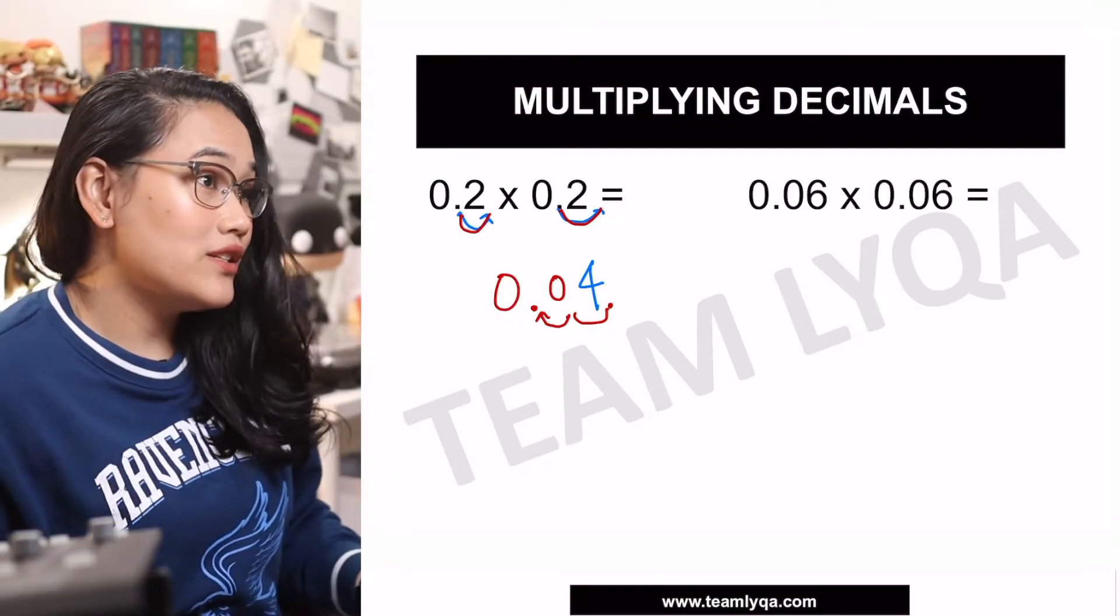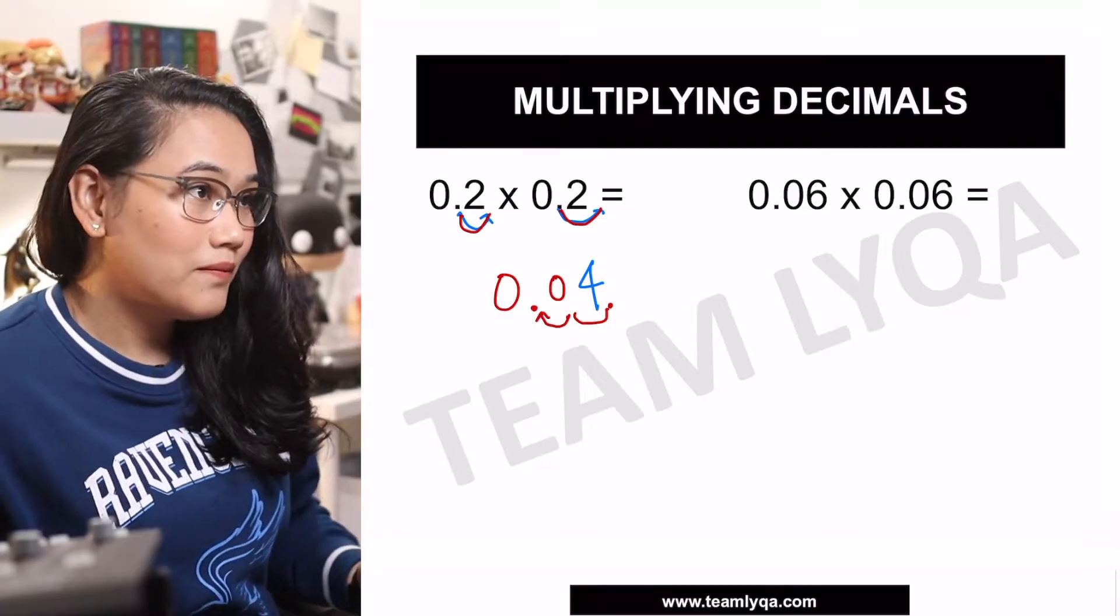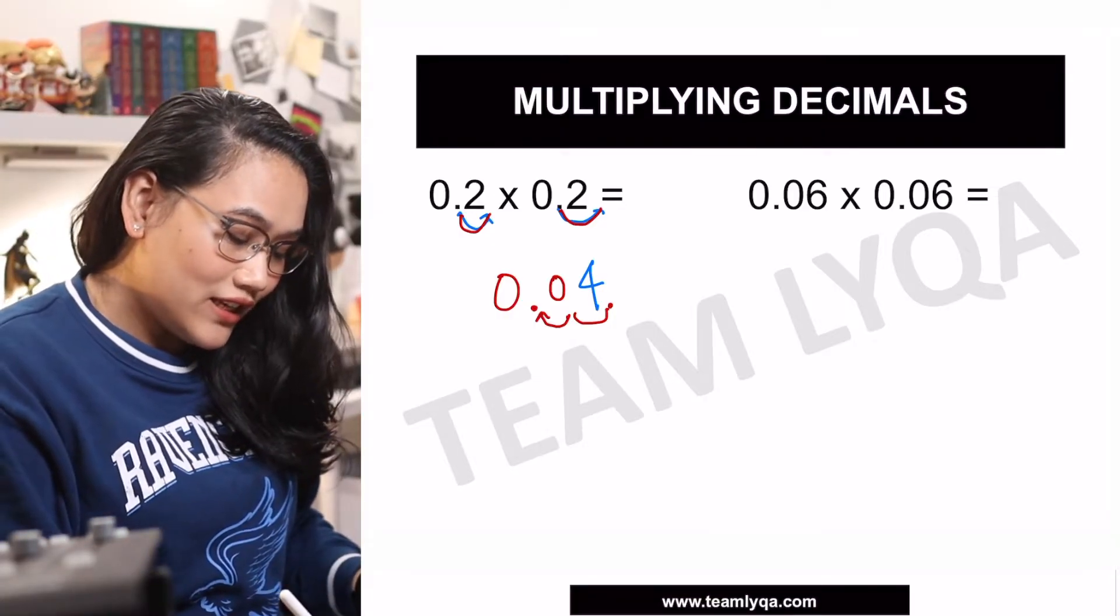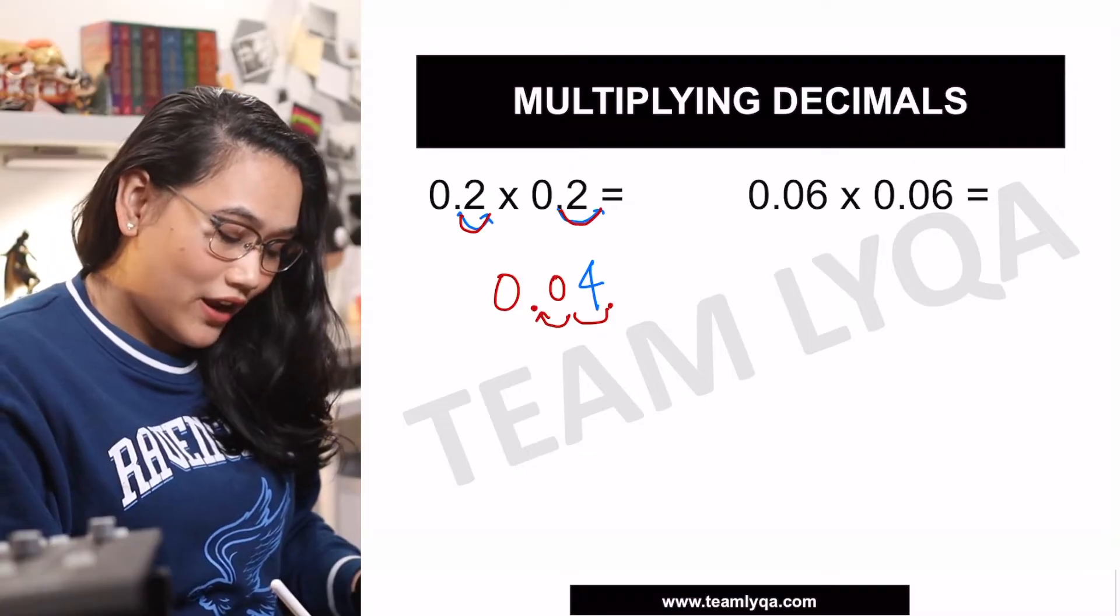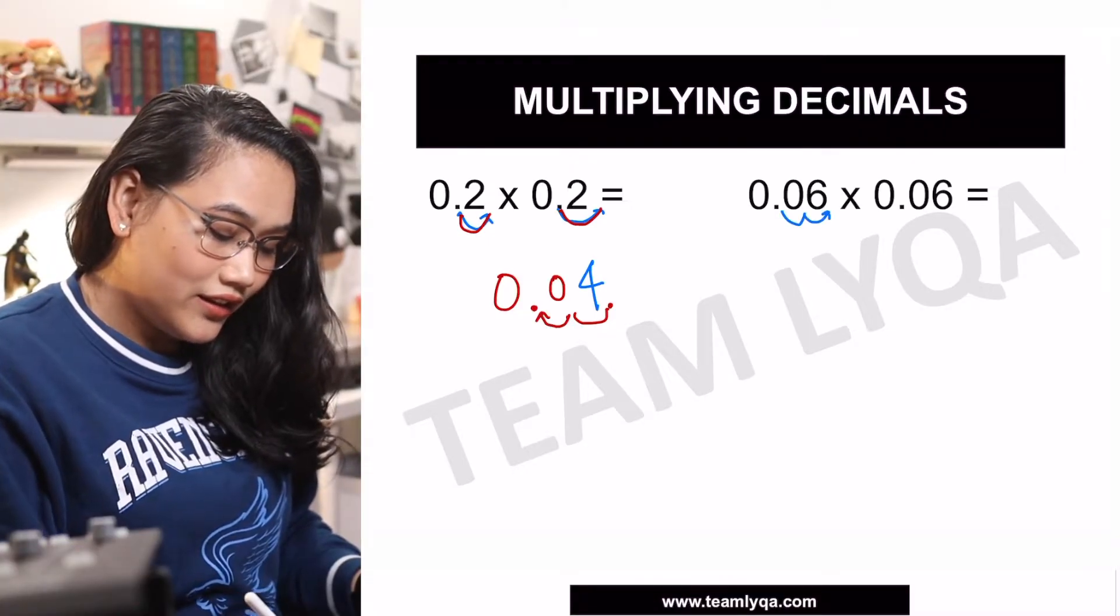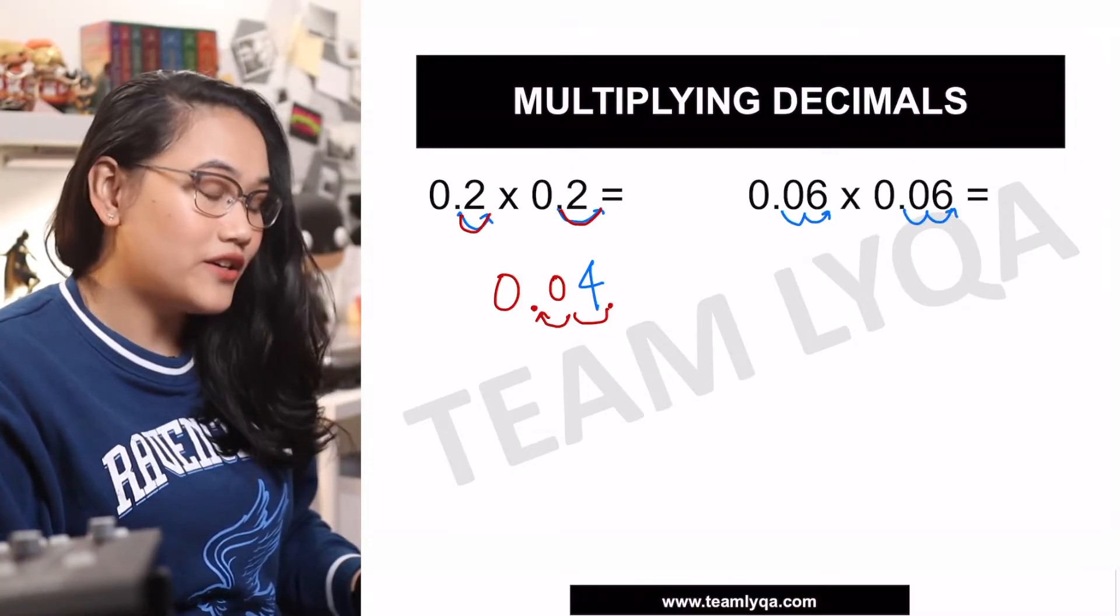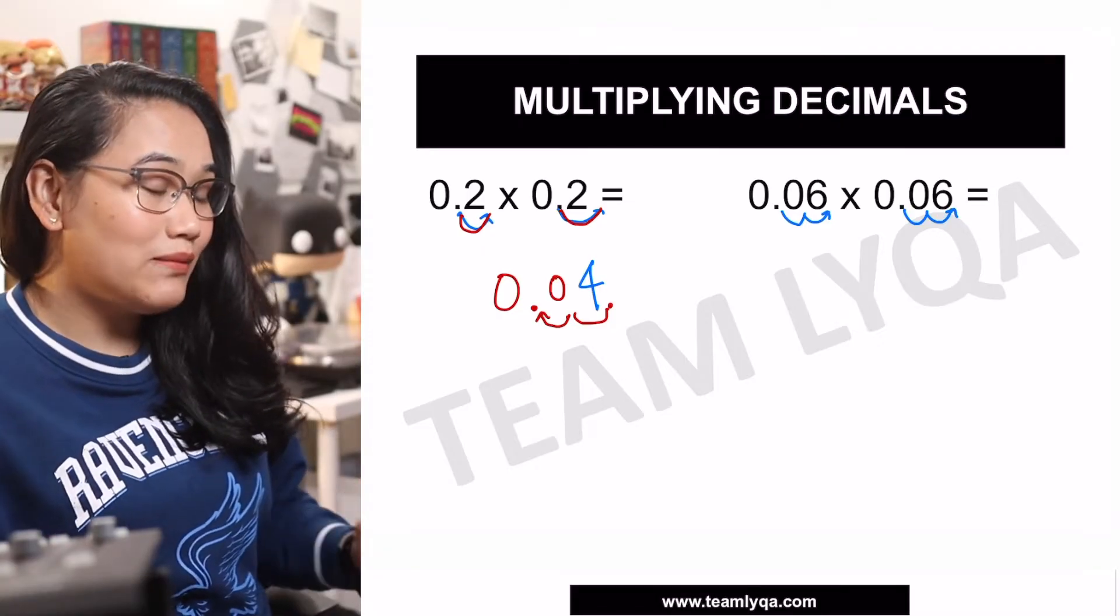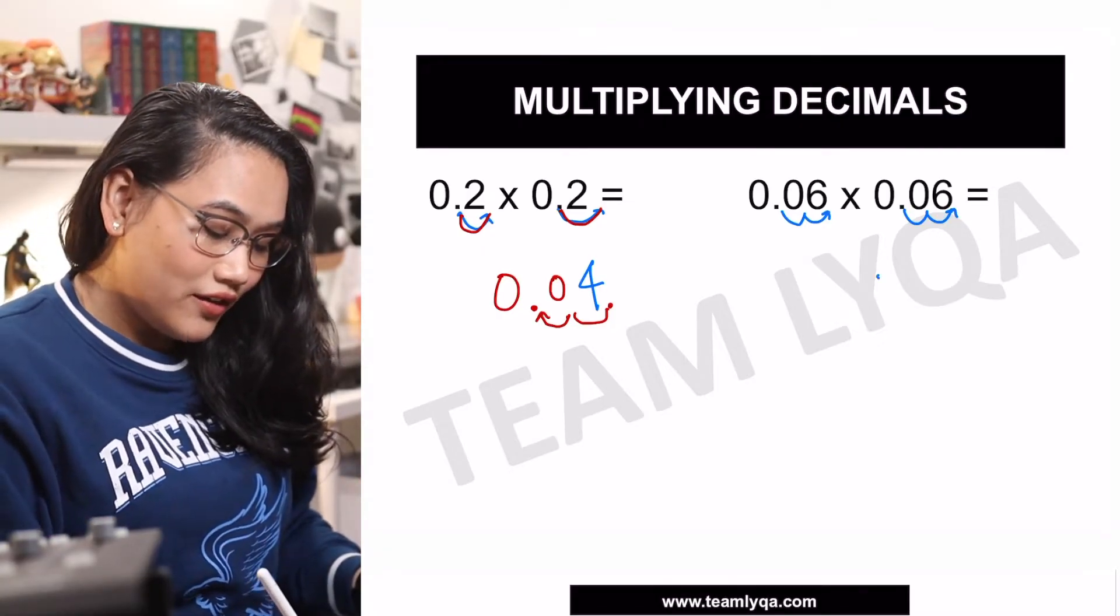Now, for 0.06 times 0.06, it's the same concept. We move the decimal place to make them whole numbers. You have 1, 2 right here. 1, 2 right here. Now you have 6 times 6, which will give us 36.